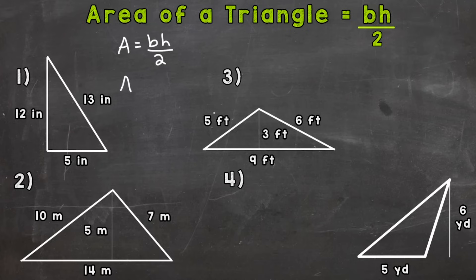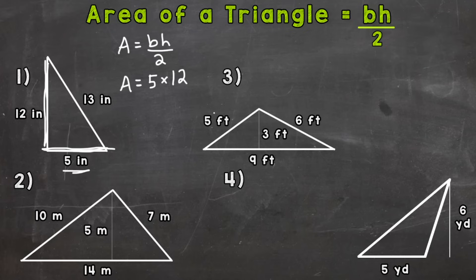Now under our formula we're going to plug in our base and height. Our base is 5 inches — this is the base of our triangle — times the height of 12 inches. So I plug in the 12 and we divide that by 2. So we know 5 times 12 is 60, and now we need to do 60 divided by 2 to get to our answer. Notice we have 60 divided by 2 written as a fraction there — that's fine, a fraction is division.